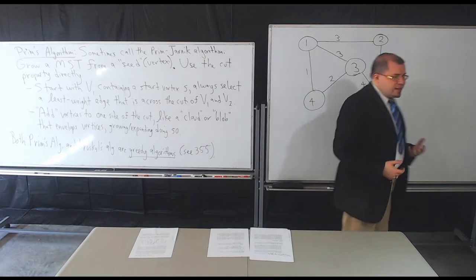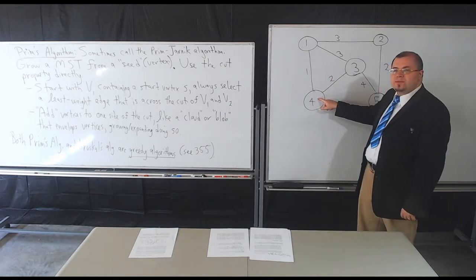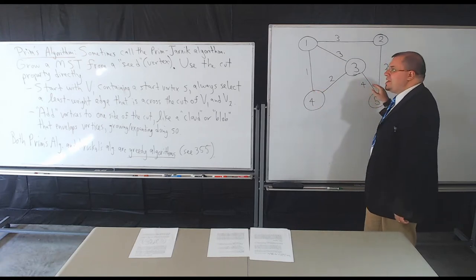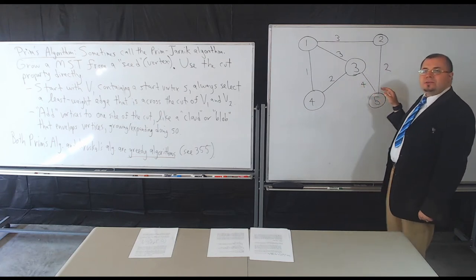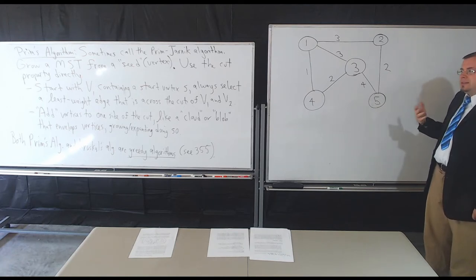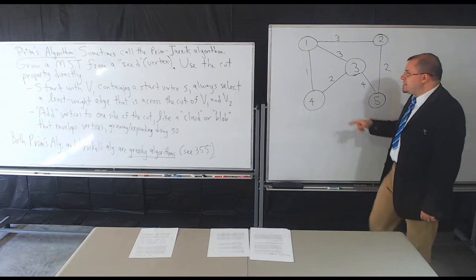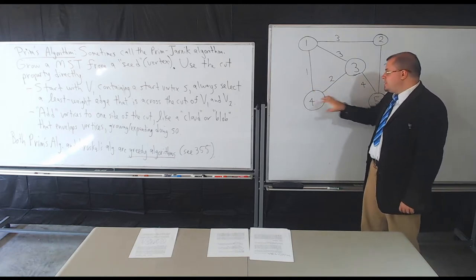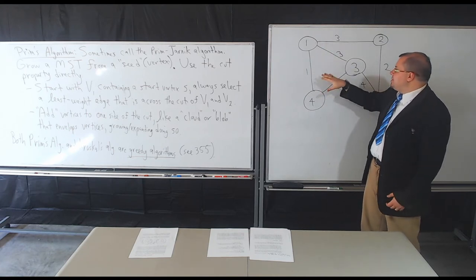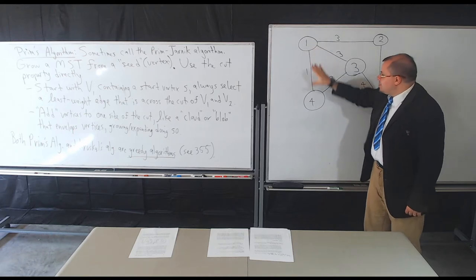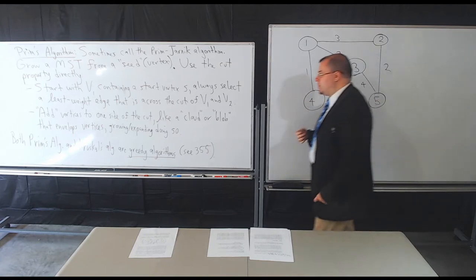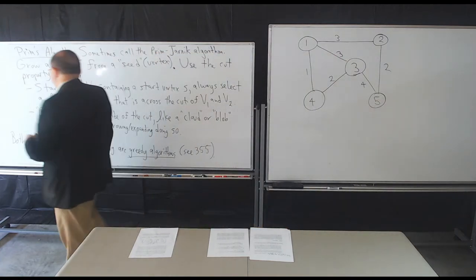What do I mean by this? Imagine I pick a starting vertex. I'm going to assume that vertex is V1 and everything else is V2. The cut property says we just pick the least weight edge — say between vertex 4 and all the other vertices. I would select that edge, and then consider all those in V2 and pick the least weight edge. Repeat this process over and over again. That is Prim's algorithm at its heart.